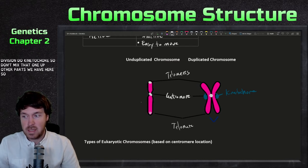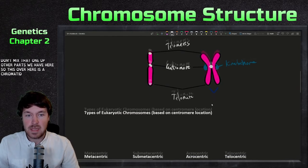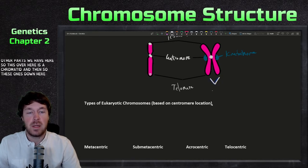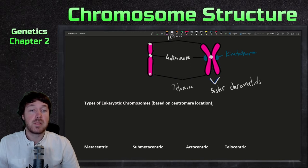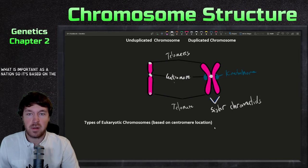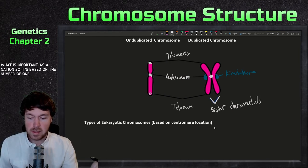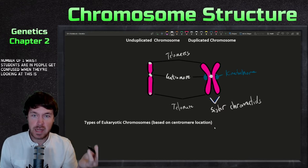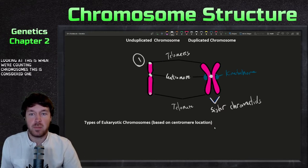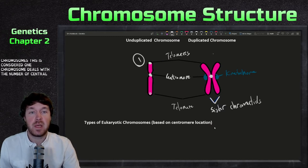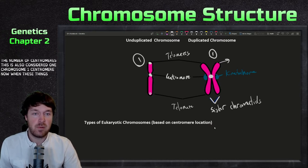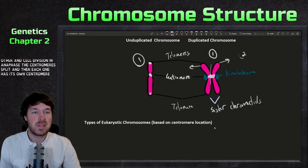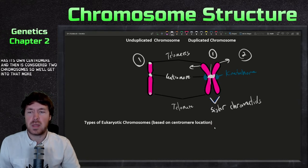Each individual copy is called a chromatid, and the pair together are called sister chromatids. An important point when counting chromosomes: one chromosome is defined by the number of centromeres. A duplicated chromosome — with two chromatids joined — still counts as one chromosome because there is one centromere. When they move apart in anaphase during cell division, the centromere splits, each one gets its own centromere, and then it's considered two chromosomes.